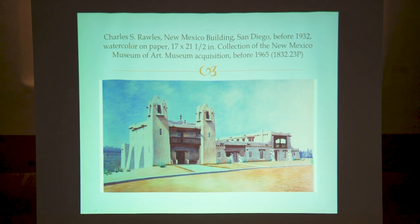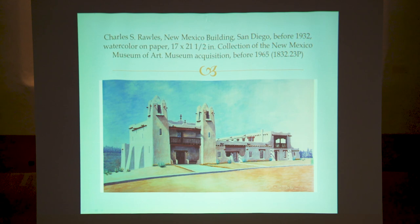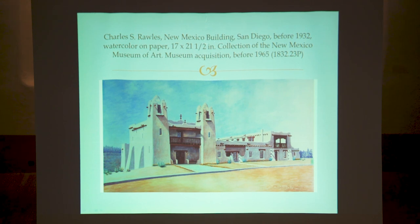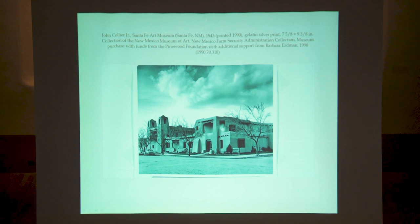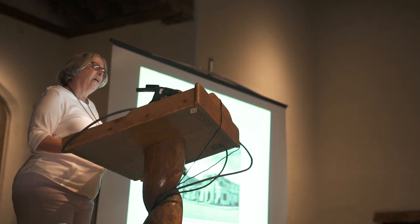San Diego was in competition with San Francisco to get the recognition they felt they deserved, because they were also afraid of slipping away. This is a rendering of the as-built New Mexican building in San Diego — and you see it bears a shocking resemblance to the building we're in. The agaves parked out front are kind of a dead giveaway that we aren't in Santa Fe, but otherwise it looks kind of familiar.